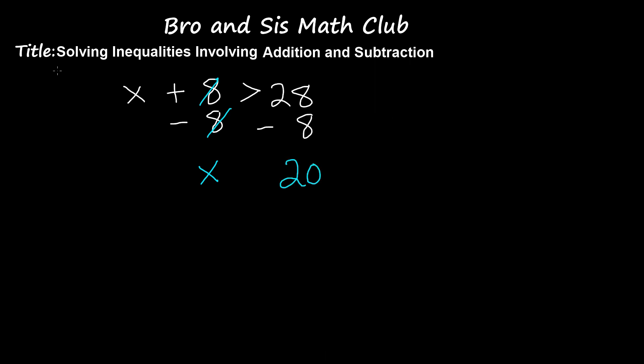Now, we bring down our sign, which is x is greater than 20. So, this is the solution to our inequality. Now, let's do another one.